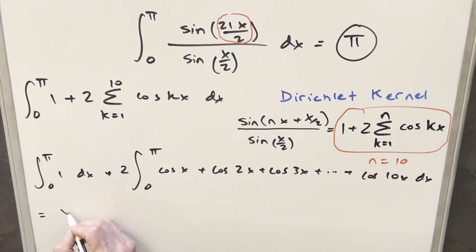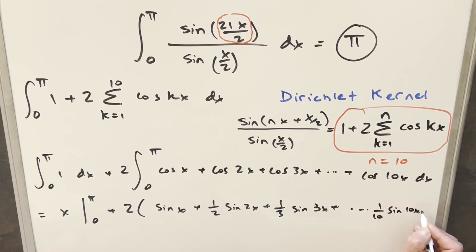But then the integral of 1 is going to be just x evaluated from 0 to pi. And then here, integrating all this stuff, integral of cosine x is sine x. Integral of cosine 2x is 1 half sine 2x. And we don't really need to do all this out, but we'll just do a couple. And then at 10, it's going to be one-tenth sine 10x.